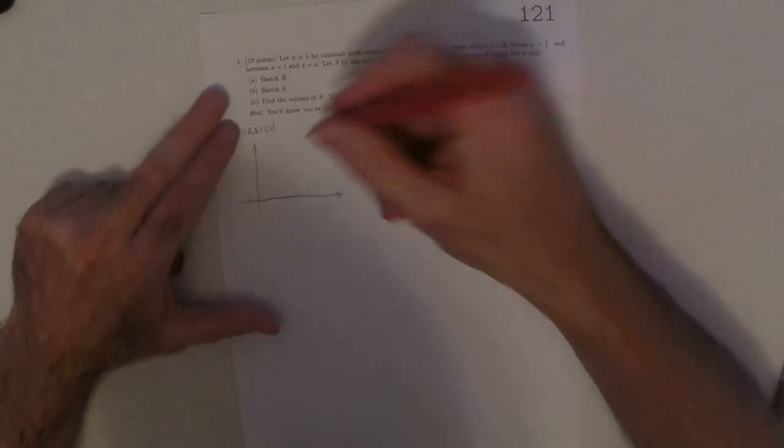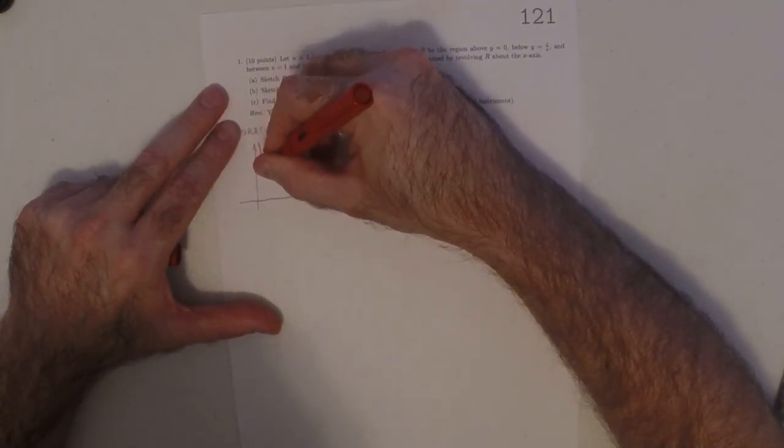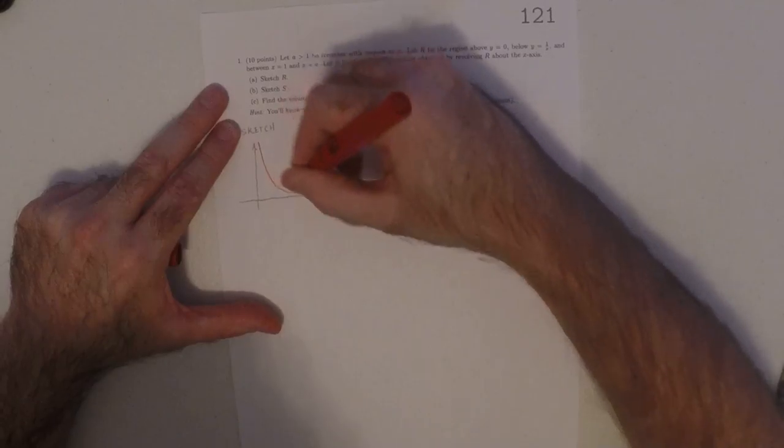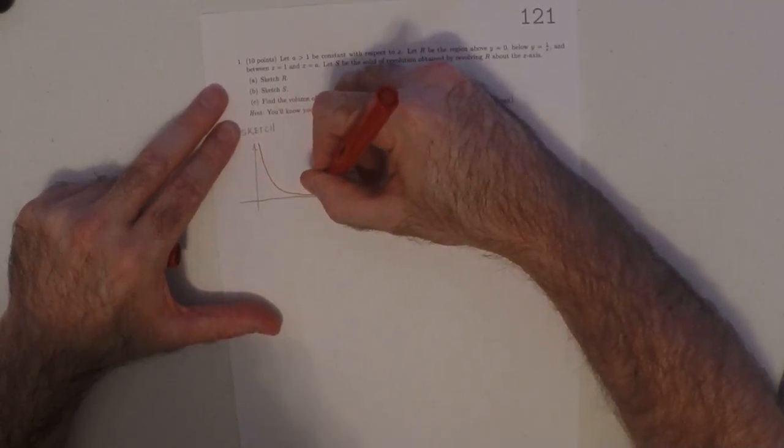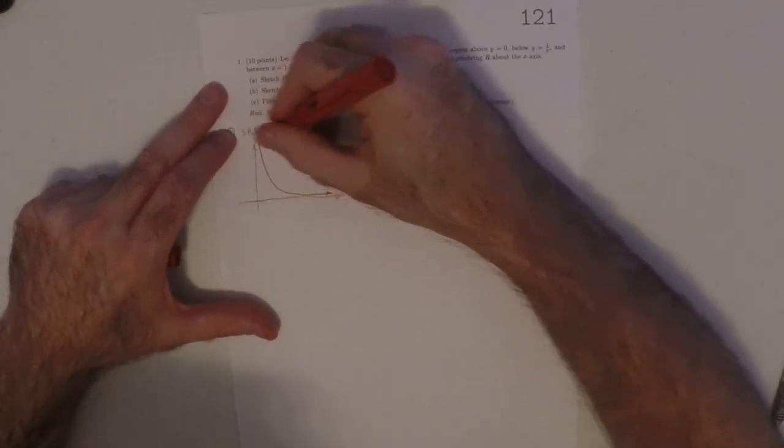We've got 1 over X. So 1 over X looks like this. A plot of 1 over X.